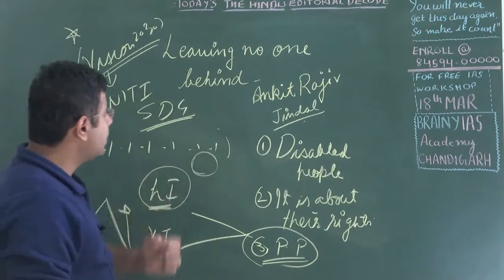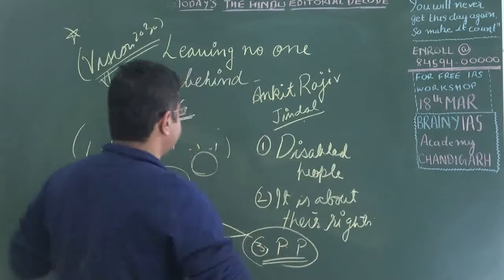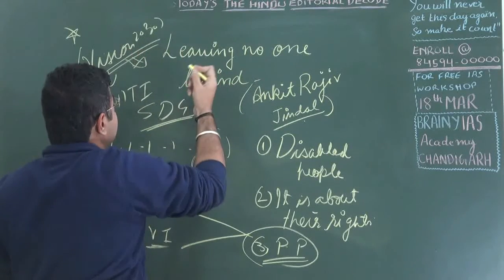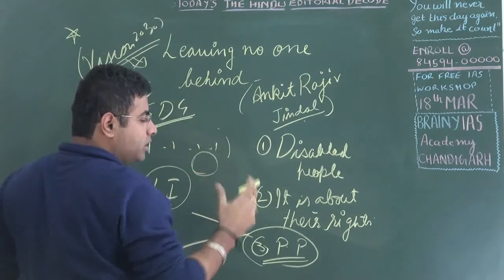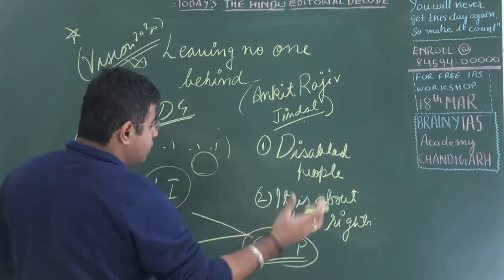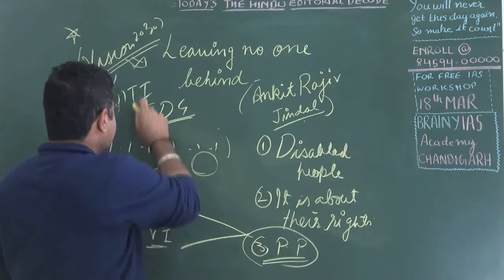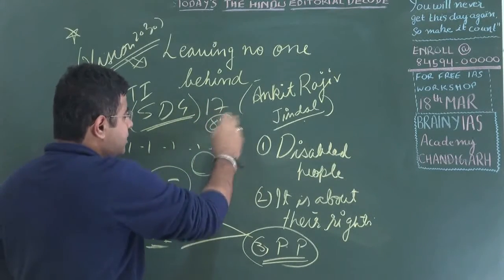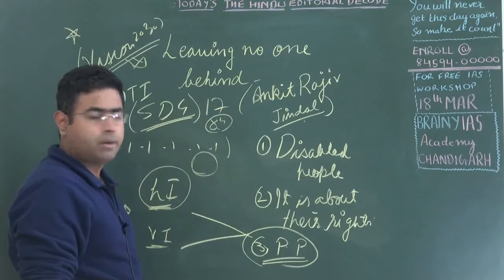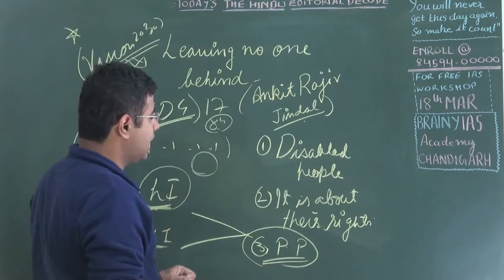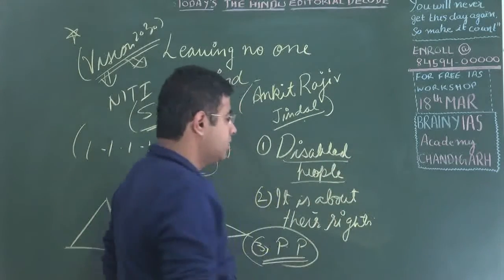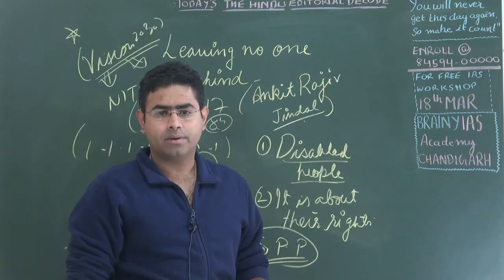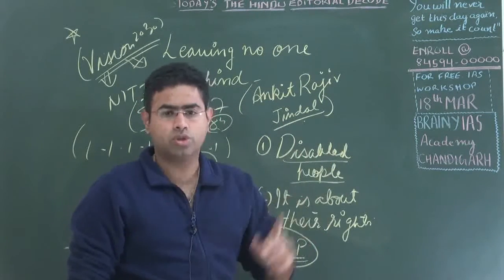What does the author Ankit Rajiv Jindal want to highlight? According to him, you are mentioning certain policies and programs and rights that should be conferred to the disabled population. In SDGs, you have 17 goals and around 84 sub-goals. But according to him, as far as disabled population is concerned, you are just according a part of the total goals to the disabled.